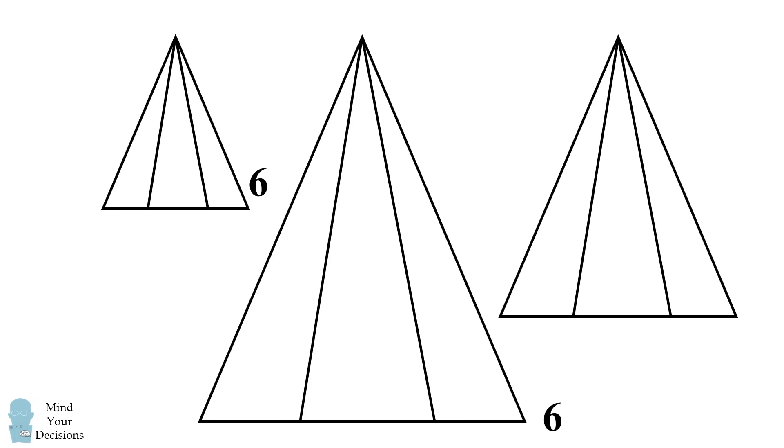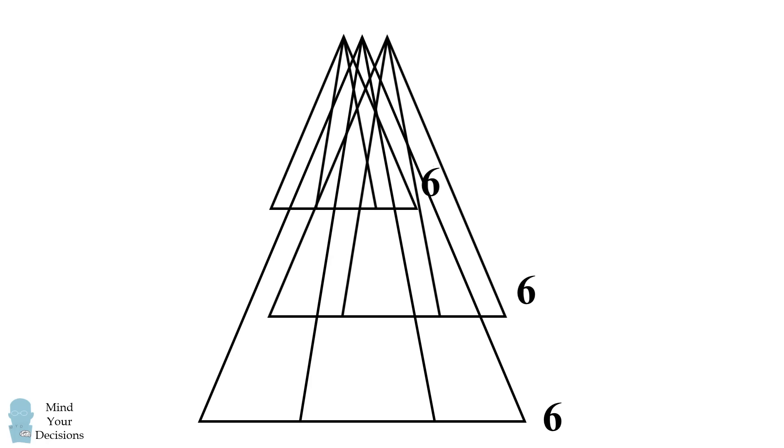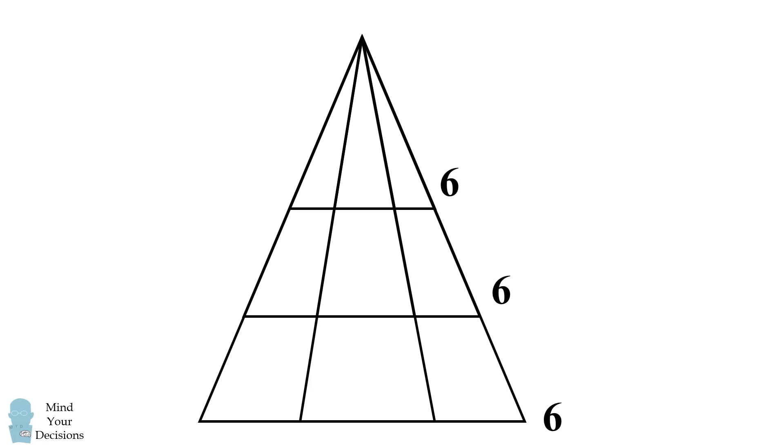And if we put them all together, we've created six plus six plus six triangles, and you can check we haven't created any other triangles. So we have a total of 18 triangles. Did you figure it out?